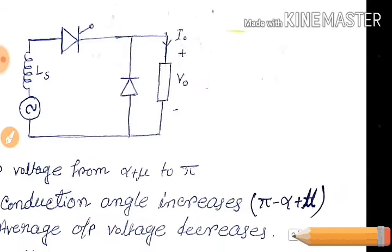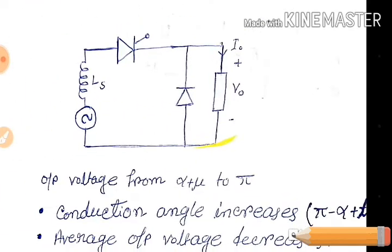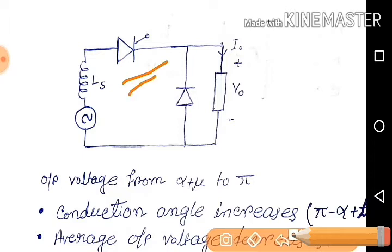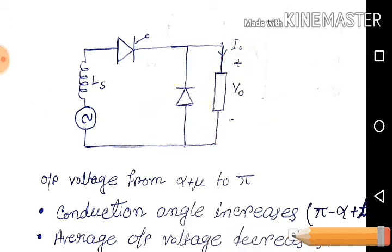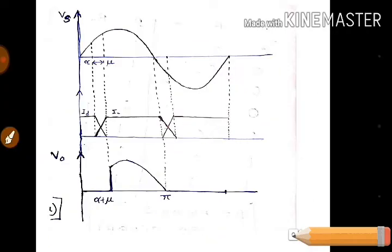Now first, look at the circuit. Here, this is the thyristor. This is source inductance, LS. It is the freewheeling diode, called FD — which is the freewheeling diode. And this is the load. We have to start our discussion from here.